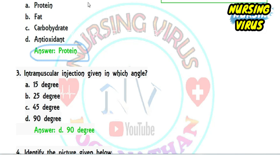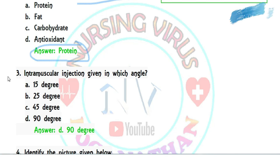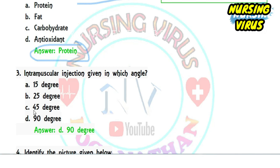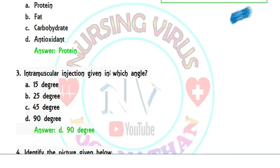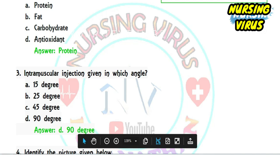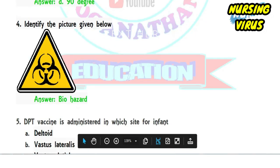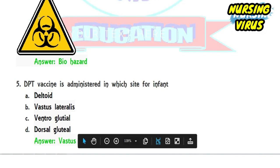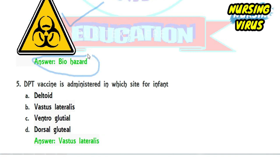Question 3: IM injection is given at which angle — 15, 25, 45, or 90 degrees? The correct answer is 90 degrees; IM injections are always given at a 90-degree angle. Question 4 was a picture identification question — a biohazard image was shown, and the correct answer is biohazard indication.